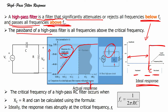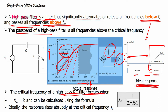For a single pole RC high pass filter, there is only one R and one C. You generate a voltage across the resistor. Because it is a first order RC filter, it has a roll-off rate of 20 dB per decade. A second order high pass filter has a roll-off of 40 dB per decade, and a third order has 60 dB per decade. As you increase the order, you approach the ideal response. The critical frequency of a high pass RC filter is FC = 1/(2πRC), the same formula used for the low pass filter.